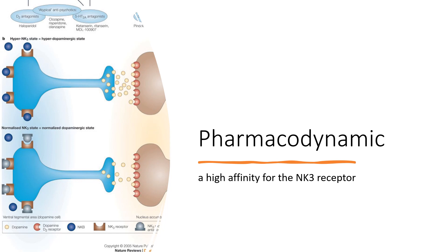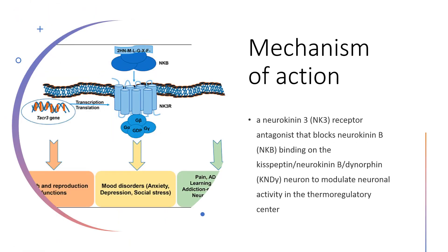At a dose 20 times the maximum approved recommended dose, Fezolinetant does not prolong the QT interval to any clinically relevant extent. Mechanism of Action: Fezolinetant is a neurokinin-3 (NK3) receptor antagonist that blocks neurokinin-B (NKB) binding on the kisspeptin/neurokinin-B/dynorphin (KNDy) neuron to modulate neuronal activity in the thermoregulatory center.